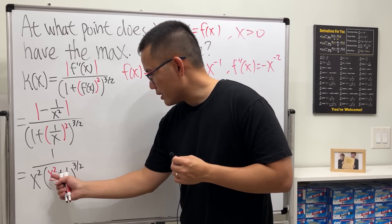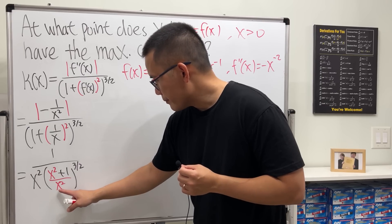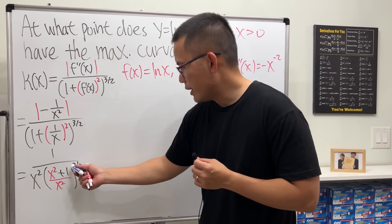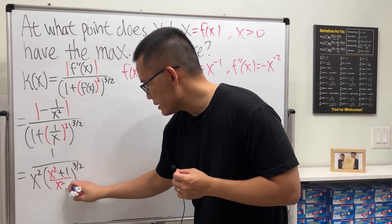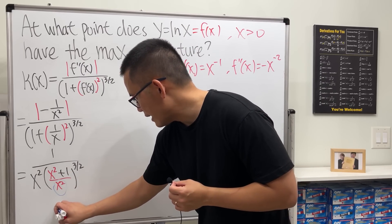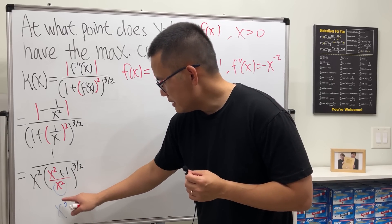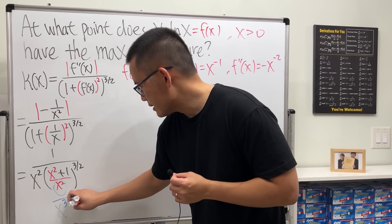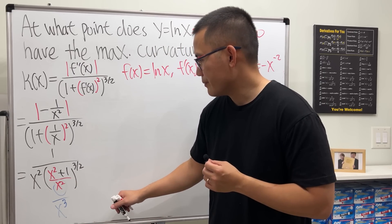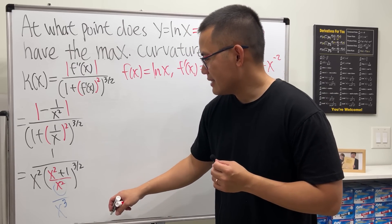The top stays as is, but for the bottom, x² raised to the 3/2 power just gives x³ — the 2s cancel. This is on the bottom, so that cancels with the numerator's x², and you're left with one x remaining on the bottom.